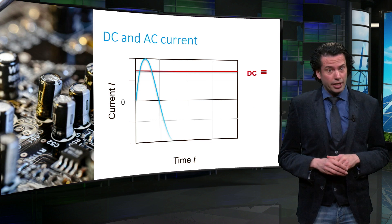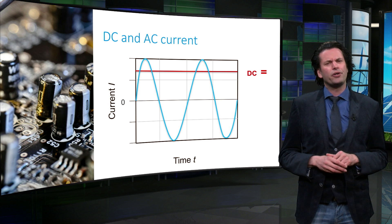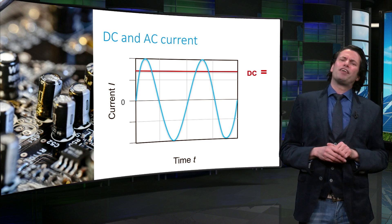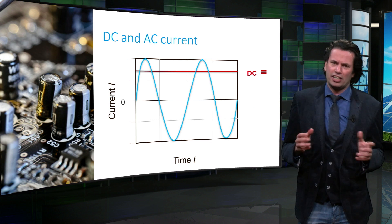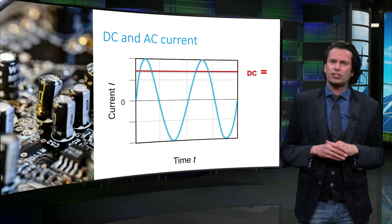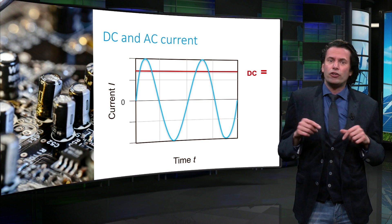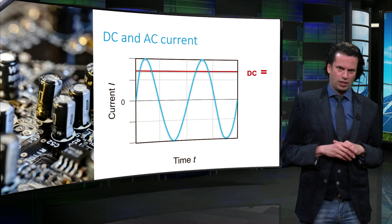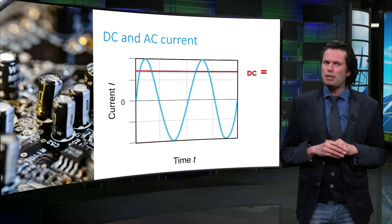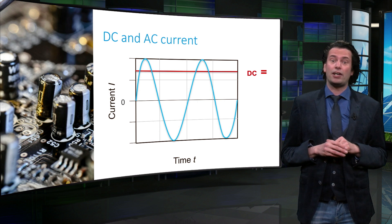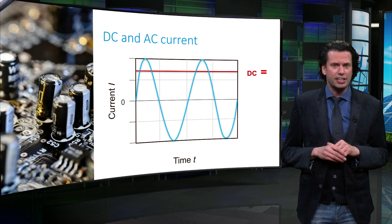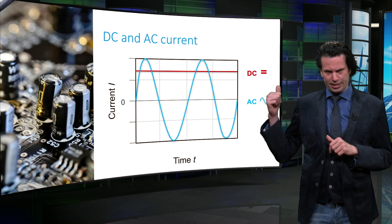AC, or alternating current, on the other hand, is the flow of electric charge such that it constantly reverses direction. The usual form of an AC power is a sine wave. The symbol for an AC signal is shown here.